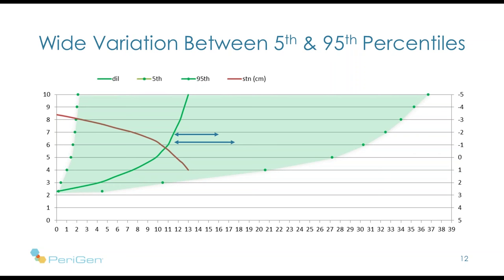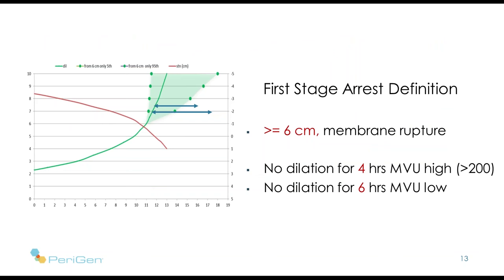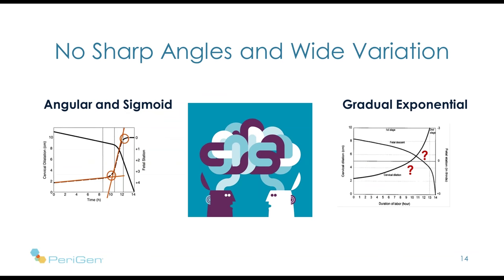If we disregard all of labour up until six centimetres and begin evaluation only at six centimetres, then the accumulated variation looks much different — and now four to six hours will generally fall outside of the fifth percentile. This is an important concept: because of the large variation in normal labour, time-based curves can only be useful if we begin our labour evaluation at six centimetres. In summary, with modern labour curves there is no angular sigmoid shape, but a gradual exponential shape with very wide variation.